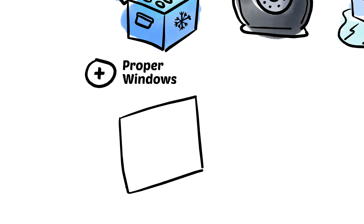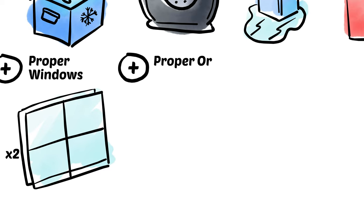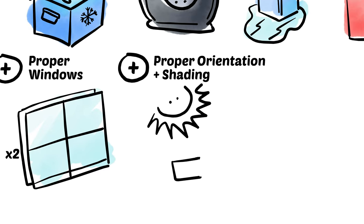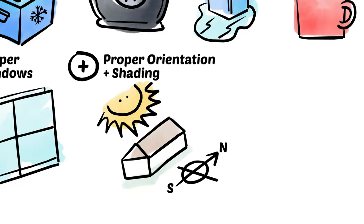Plus, the house needs proper windows, most of the time with double pane glass. It needs to be oriented properly so the sun can heat it in the winter and shade is provided in the summer.